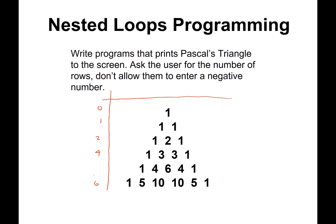We don't actually know how many rows we're going to get because we're getting that from the user. The inner loop is setting up the columns. These numbers represent the outer loop — this is going to be I, our row index. And these numbers represent the inner loop, which is going to be J, our column index.